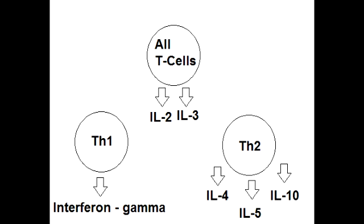What is the mnemonic to help remember the functions of some of these interleukins? The mnemonic is 'Hot T-bone steak,' which covers interleukin-1 through interleukin-5. Hot is for fever, an action of interleukin-1. T is for T-cells, because interleukin-2 stimulates T-cells. Bone is for bone marrow, because interleukin-3 stimulates the bone marrow. The letter E in steak is for IgE, because interleukin-4 stimulates IgE production. And A in steak is for IgA, because interleukin-5 stimulates IgA production.